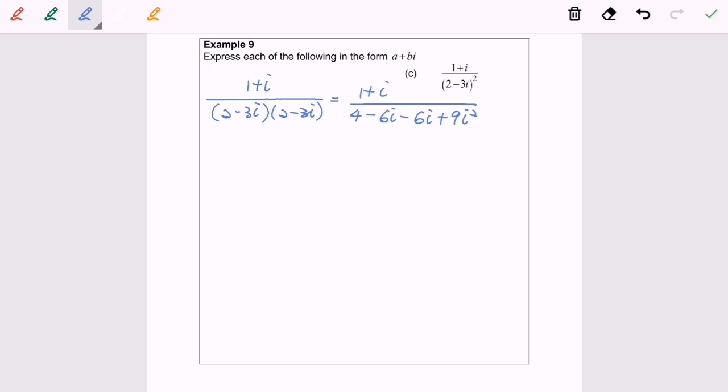As we all know, i squared is equal to negative 1. So now I'm going to simplify the situation. So 1 plus i over 4 minus 9 minus 12i. So finally, 1 plus i over negative 5 minus 12i.